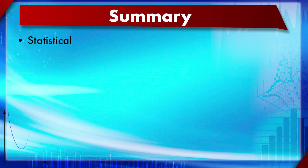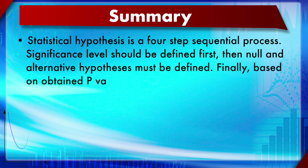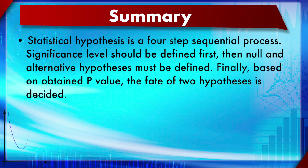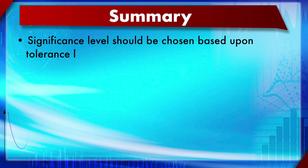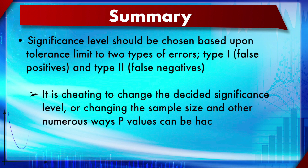In summary, statistical hypothesis testing is a four-step sequential process: define significance level first, then null and alternative hypotheses, and finally decide the fate of the hypotheses based on the obtained p-value. Significance level should be chosen based on the tolerance for two types of error — Type 1 (false positive) and Type 2 (false negative). It is cheating to change the significance level or sample size after seeing data — known as p-value hacking.